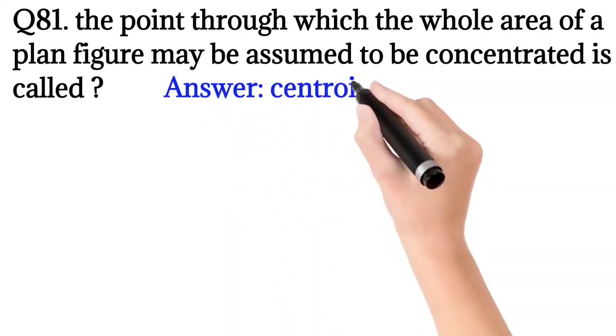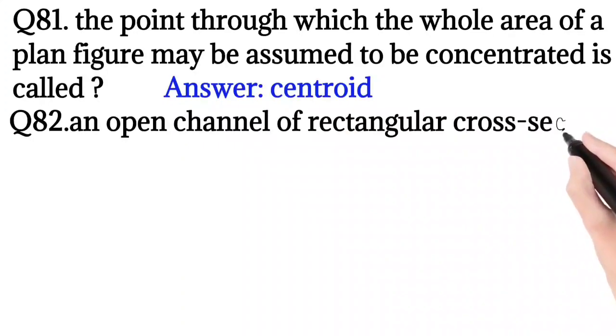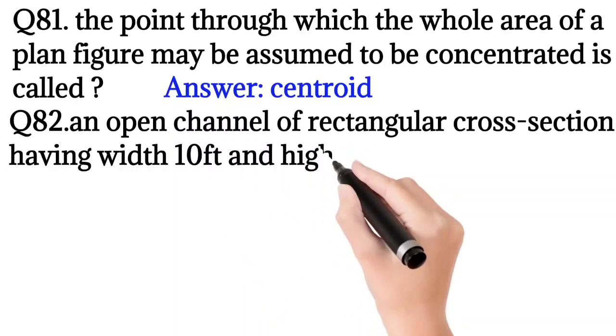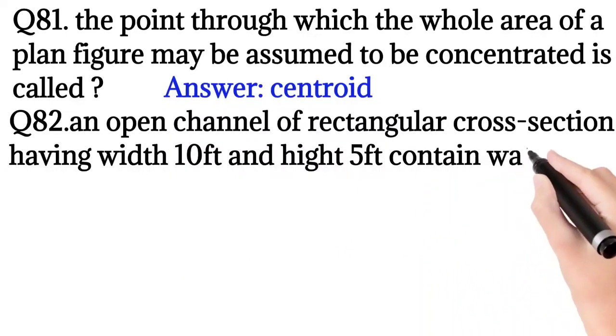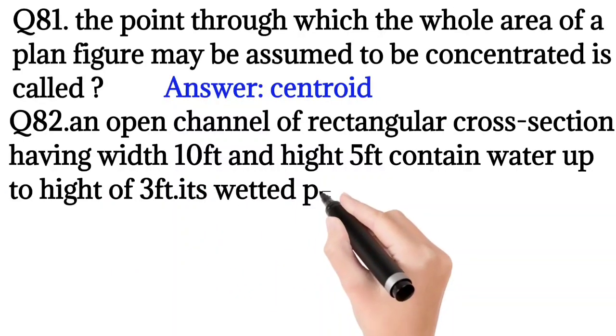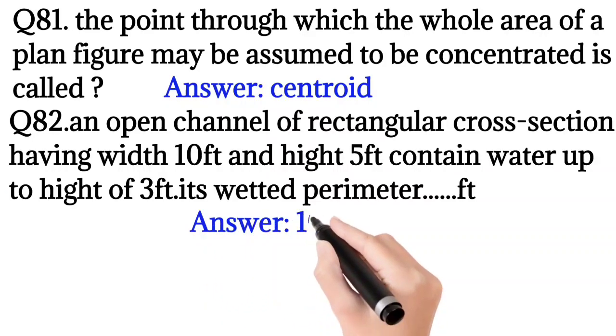Question number 82: An open channel of rectangular cross-section having width 10 feet and height 5 feet contains water up to height 3 feet. Its wetted perimeter? Answer: 16.